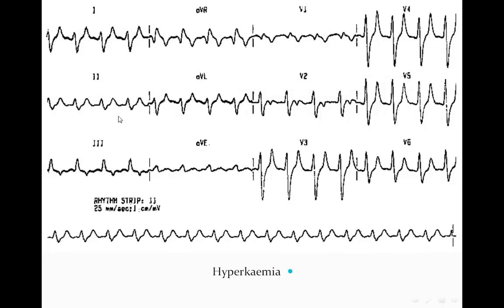This is an ECG of a hyperkalemia case. We can see this patient has a wide QRS complex. This is one of the differential diagnoses of wide QRS complex — not only conduction disturbance. Here it is also a conduction disturbance, but because of metabolic reasons, not bundle branch block. We will see later the differential diagnosis of the wide QRS complex.